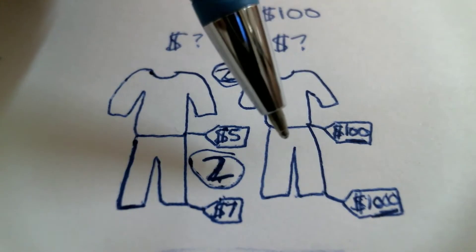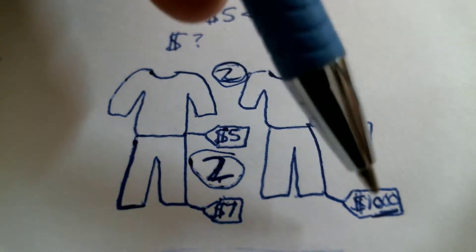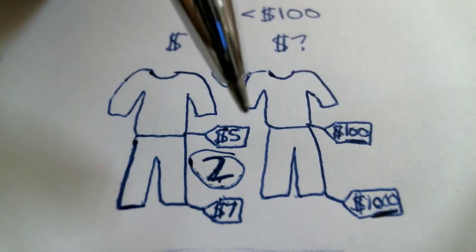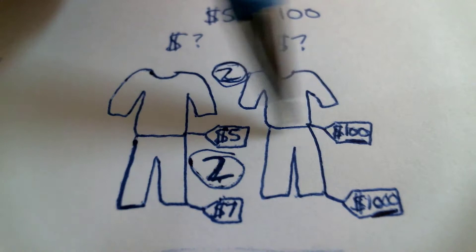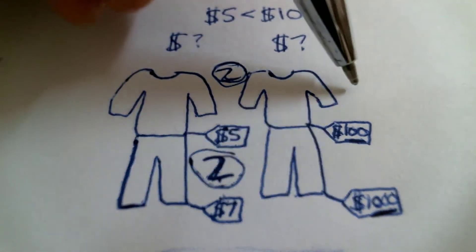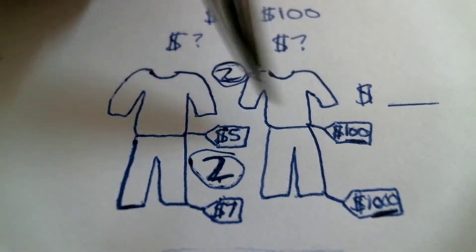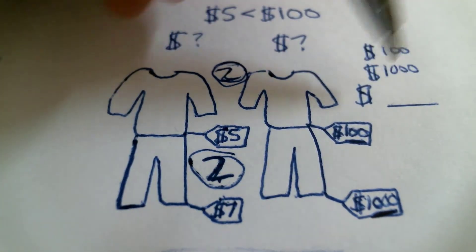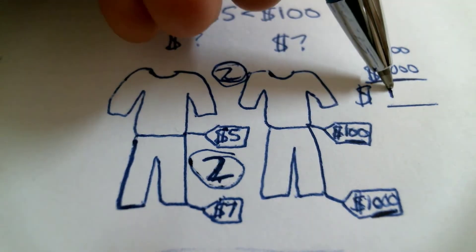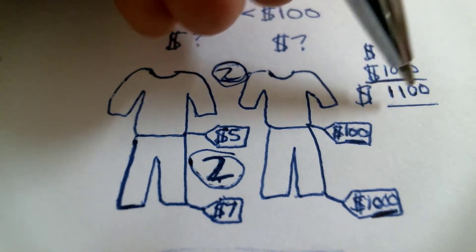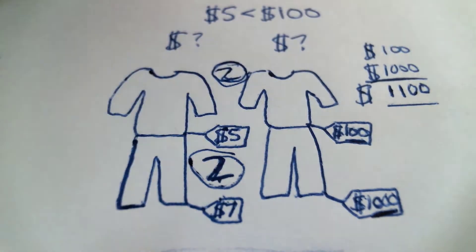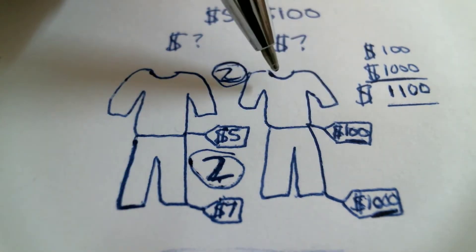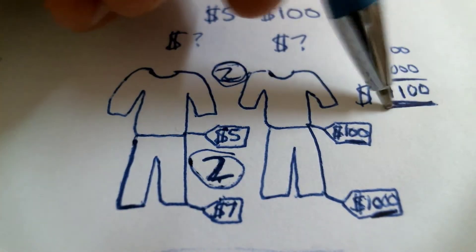Are these pants expensive? Yes, these pants are very expensive. They cost $1,000, so they're very, very expensive. How much does this shirt and these pants cost altogether? Well, the shirt costs $100 and the pants cost $1,000, so altogether they cost $1,100. Are these clothes expensive? Yes, they're very expensive. They cost $1,100 altogether.